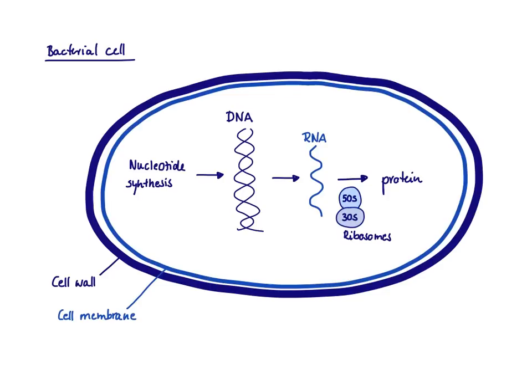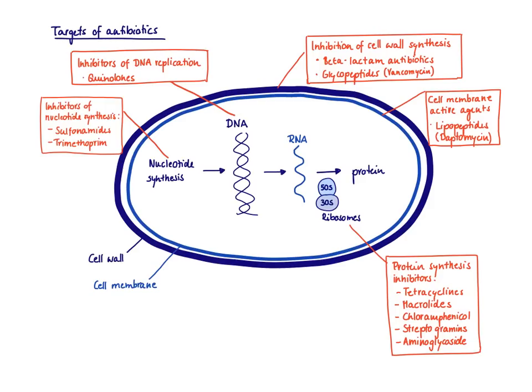Here I have drawn a bacterial cell. You can see the cell wall and then the cell membrane. When a cell divides, it first makes nucleotides, then DNA. The DNA gets transcribed into RNA, and then in a process called translation, which happens on the ribosome, you make the protein. In this simple drawing, you can now add all the different antibiotics we have, because we want to target only characteristics of prokaryotic cells not present in eukaryotic cells. Let's put in the major classes of antibiotics with their targets.